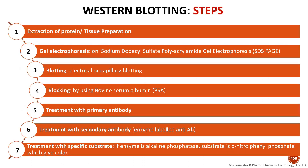Coming to the steps: the first step is extraction of protein or tissue preparation, similar to Southern blotting. The second step is gel electrophoresis using sodium dodecyl sulfate polyacrylamide gel electrophoresis (SDS-PAGE). The third step is blotting using electrical or capillary blotting. The fourth step is blocking using bovine serum albumin. Then treatment with primary antibody, followed by treatment with secondary antibody labeled with an enzyme.